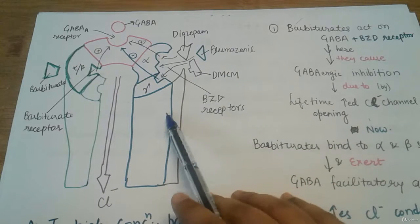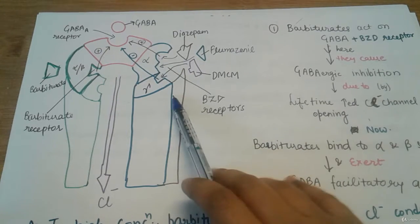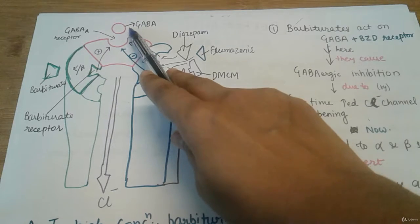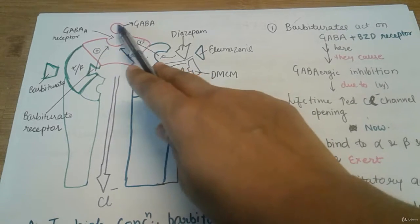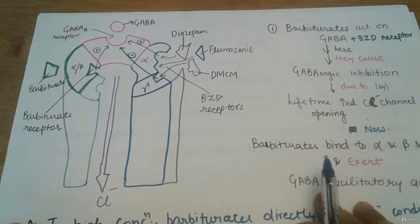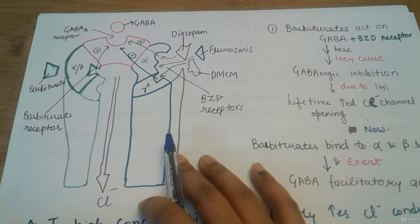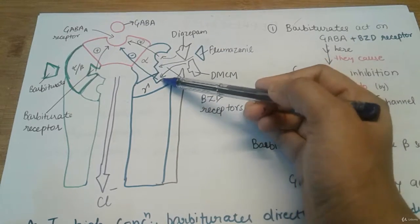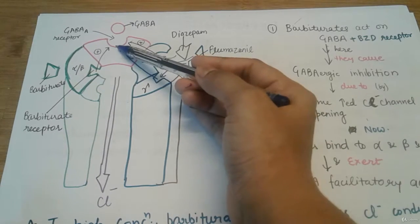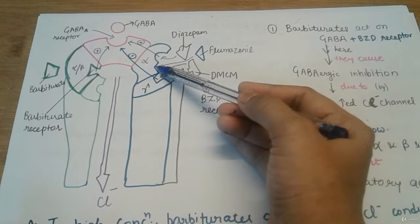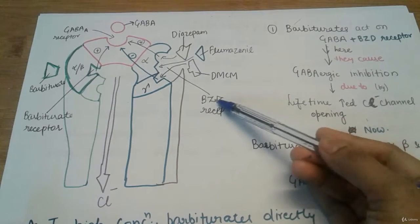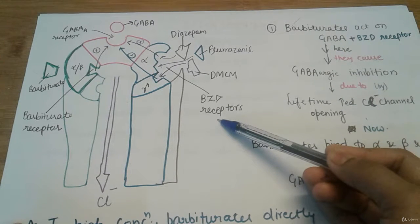Now let's look at the mechanism of action of barbiturates on GABA. Barbiturates act on GABA — gamma-aminobutyric acid — present on its receptor. In the diagram I have shown multiple receptors and a chloride channel. There is the barbiturate receptor, the GABA receptor, the diazepam receptor, the flumazenil receptor, the DMCM receptor, and the benzodiazepine (BZD) receptor.